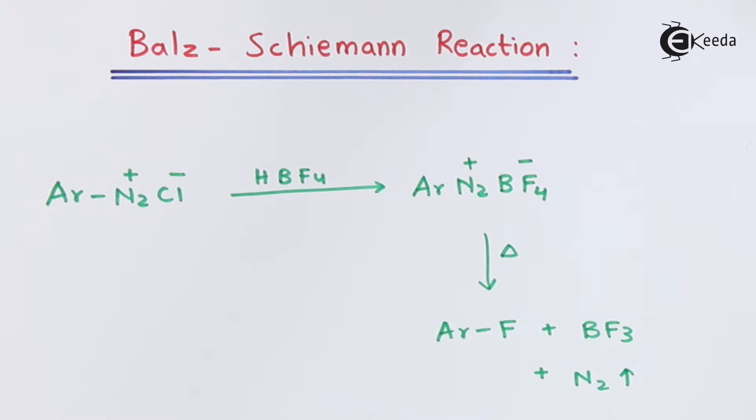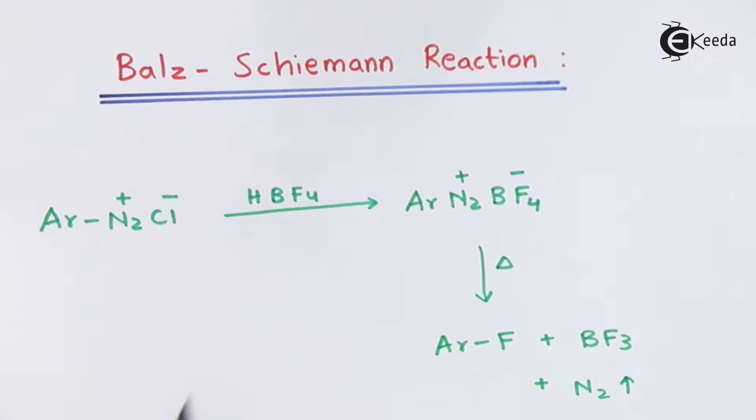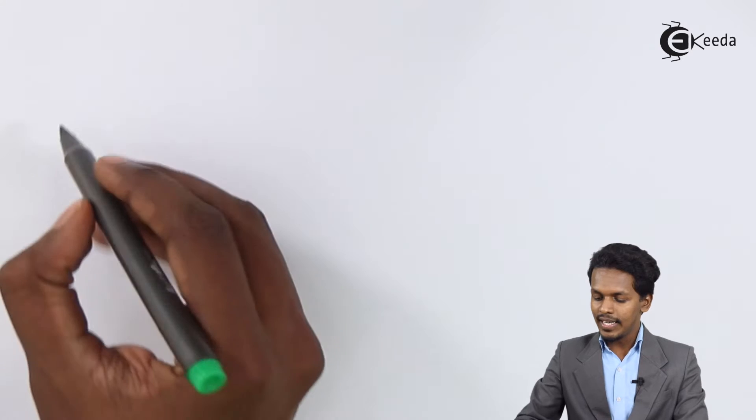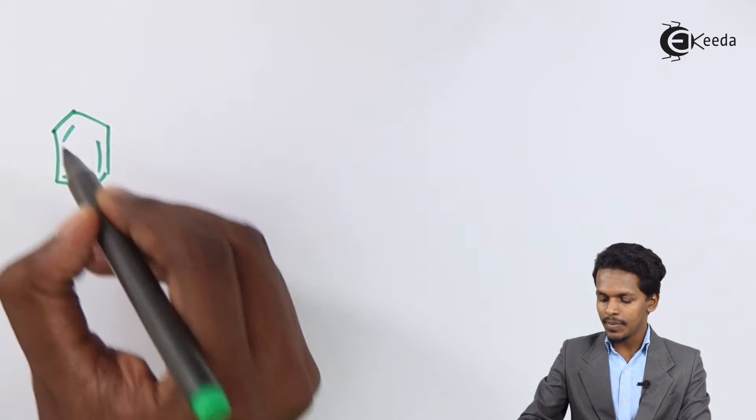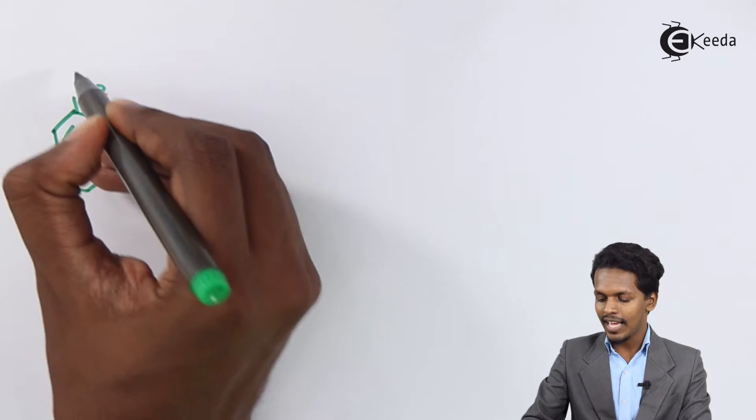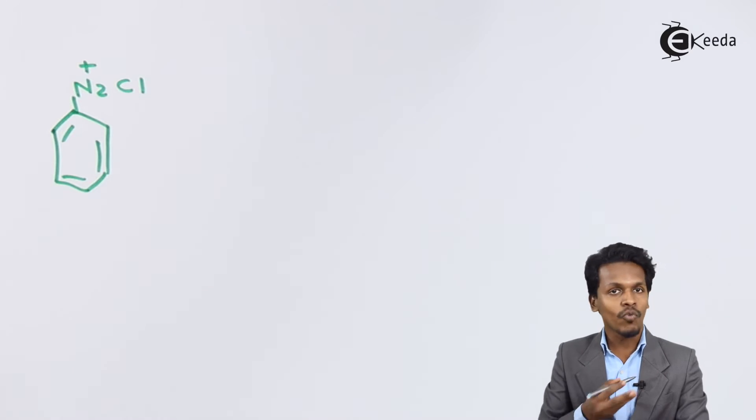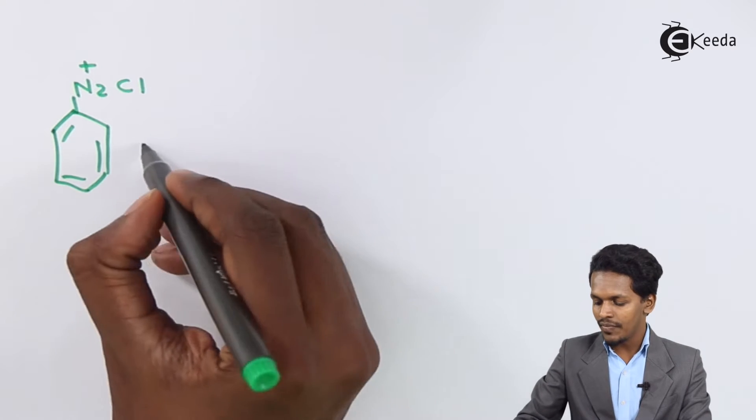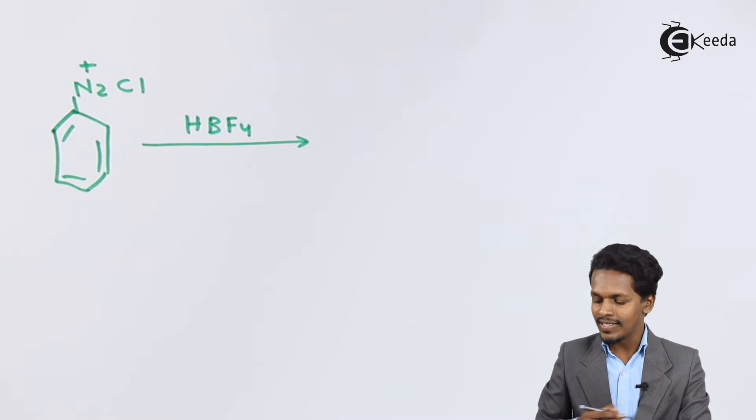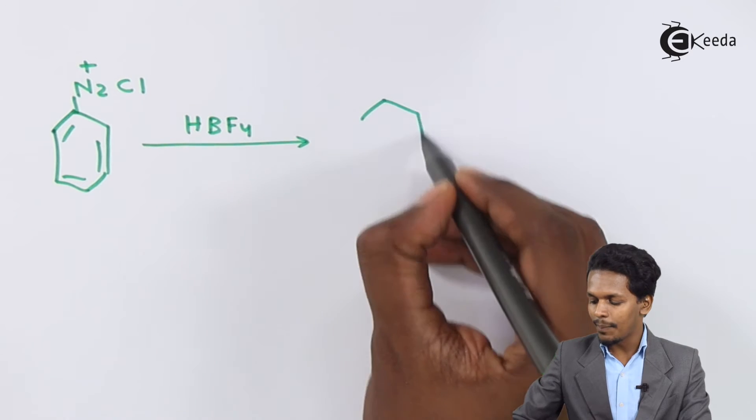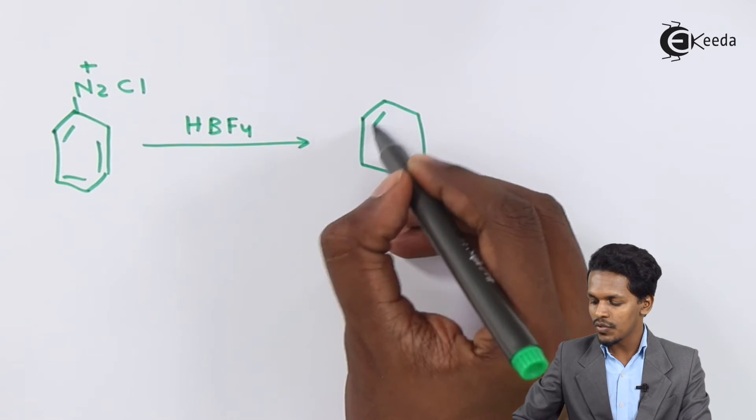Let me talk about this general reaction with the help of an example. Suppose, friends, if we are treating benzene diazonium chloride, which we can obtain from aniline, and suppose if we are treating it with HBF4, that is fluoroboric acid.